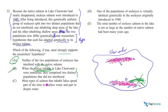Answer C says most types of salmon that inhabit lakes — just imagine the entire world of salmon species, more than 50% of them — you're going to tell me something about most of them. That's irrelevant to this specific case.